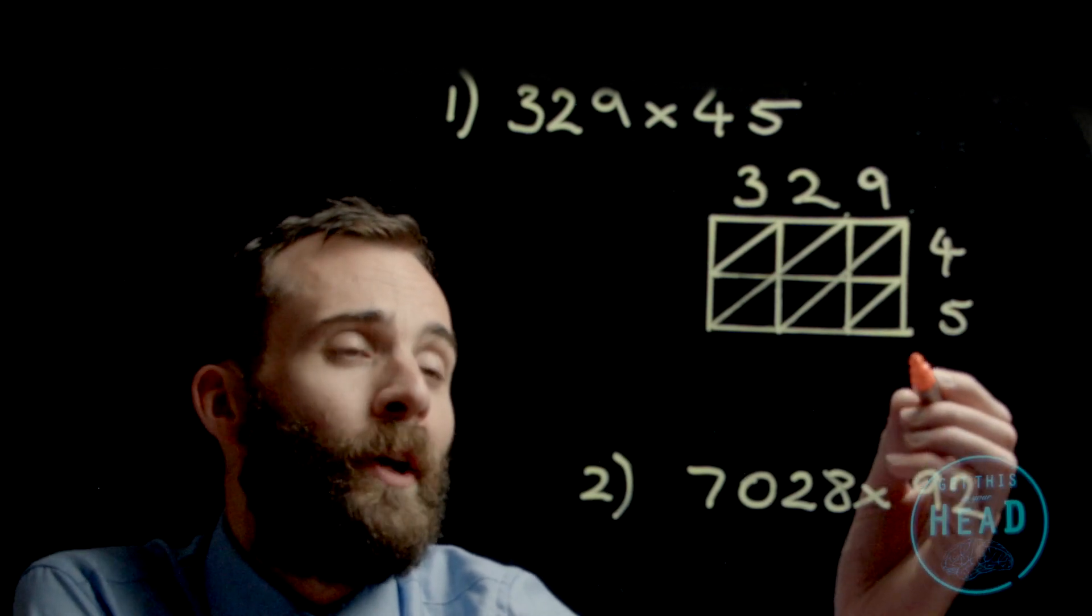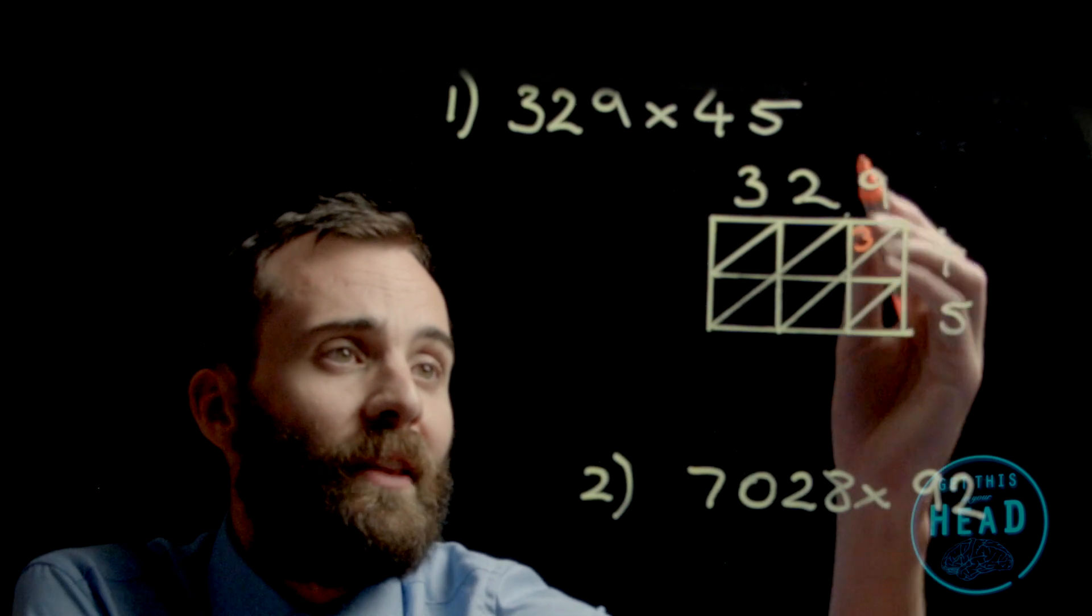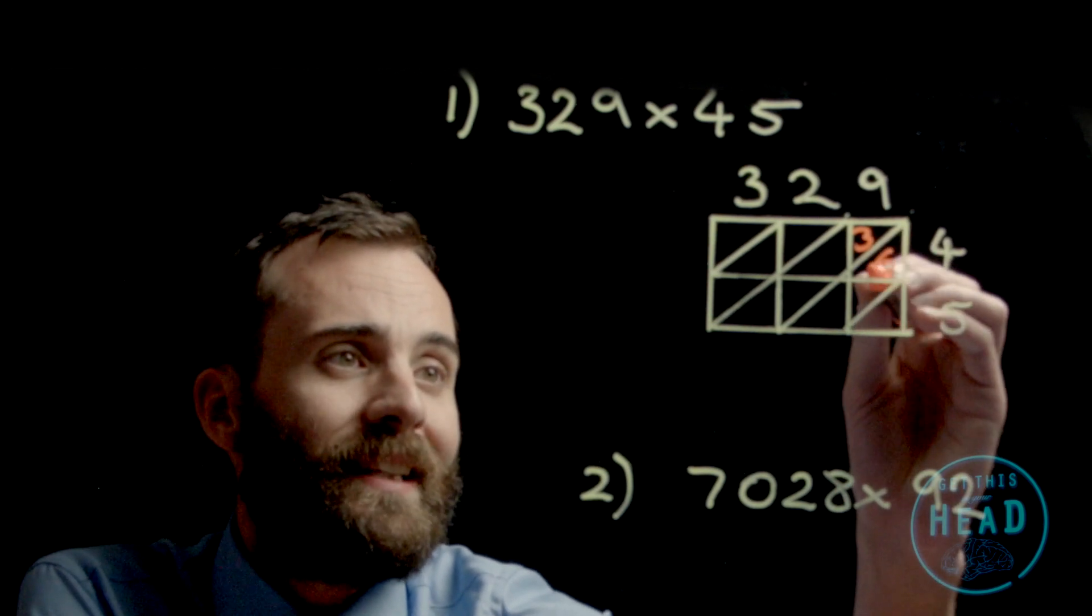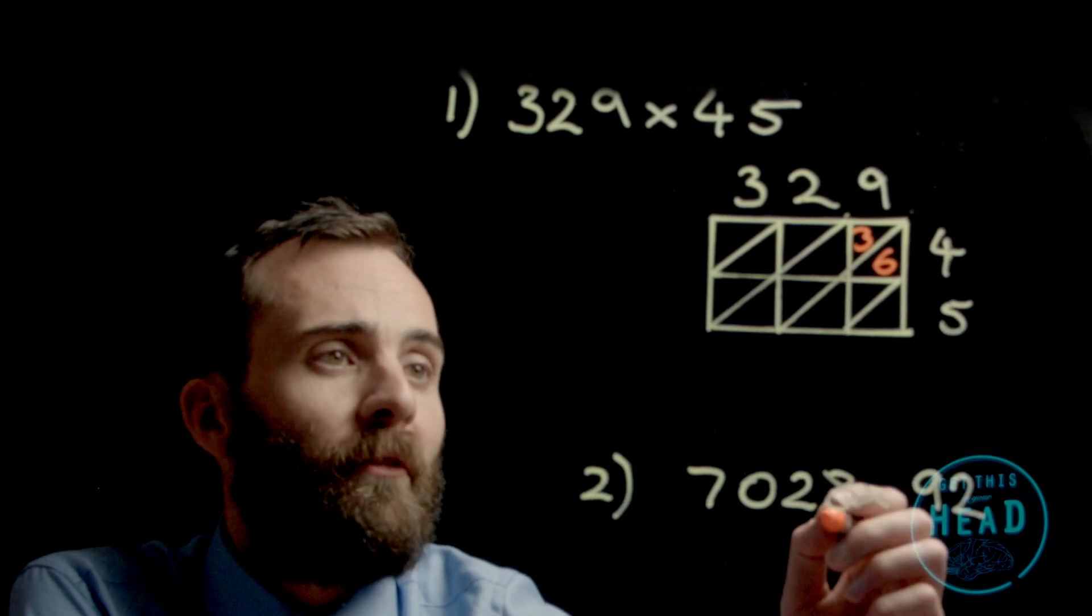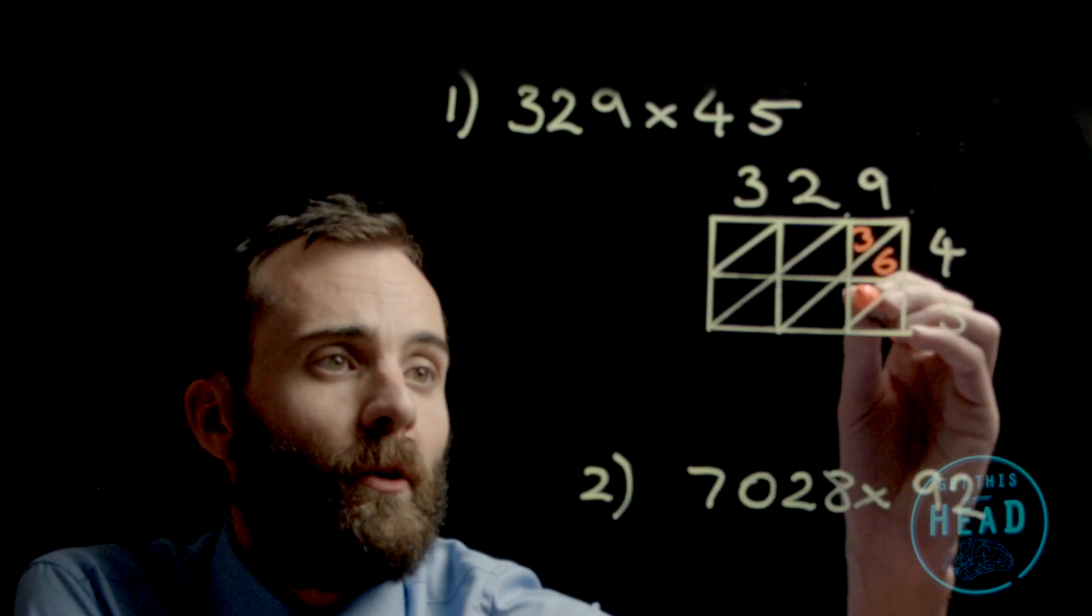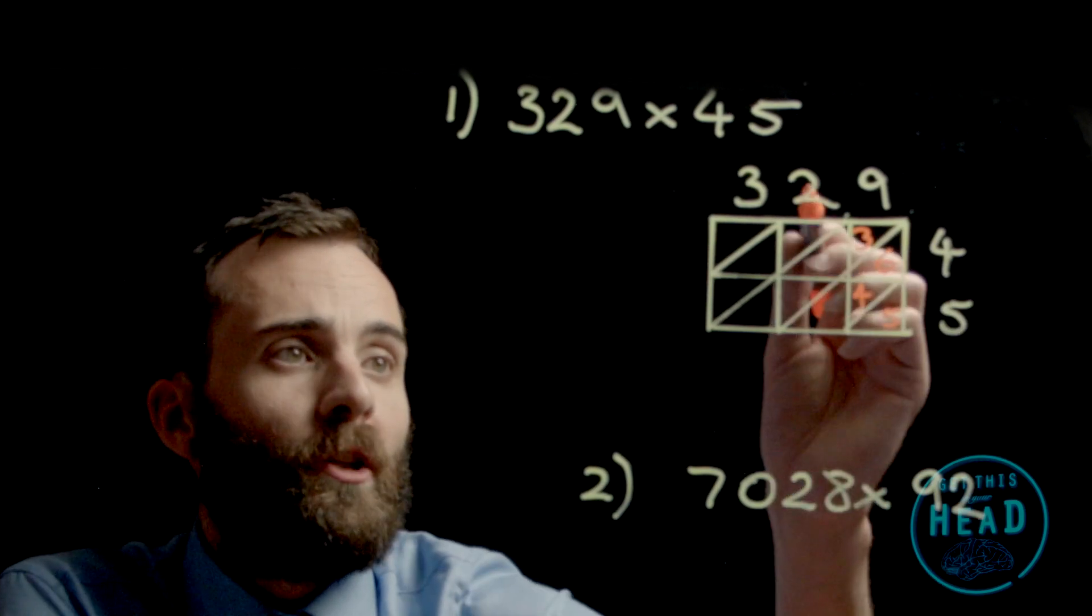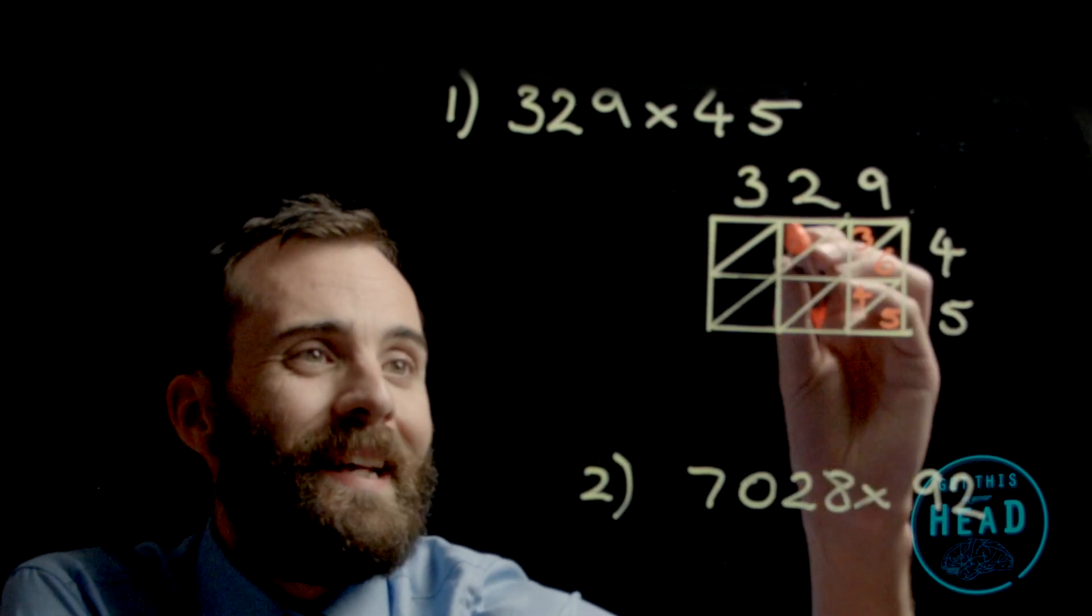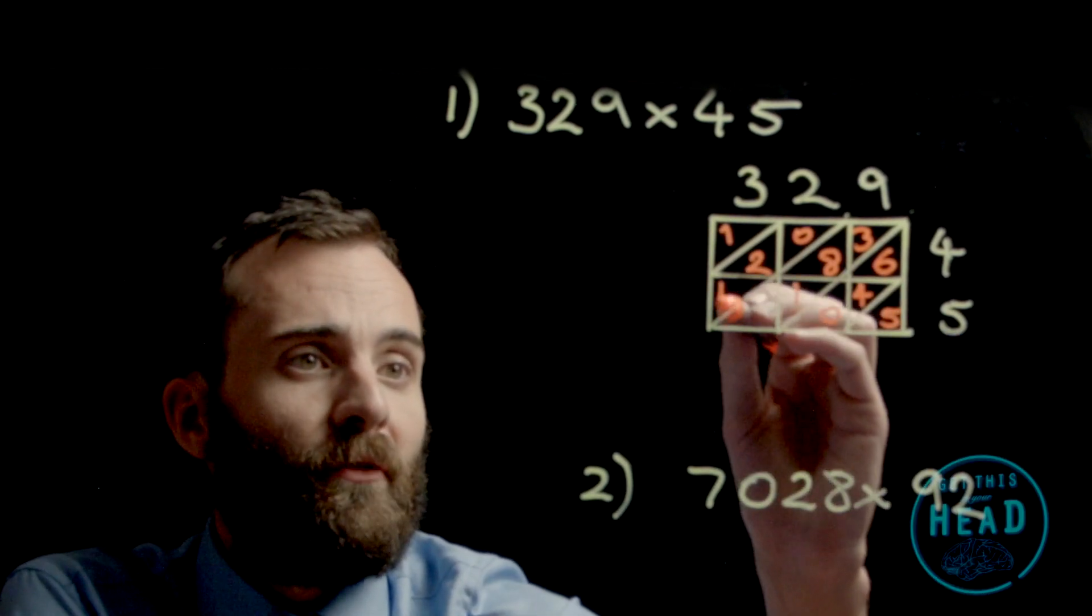9 multiplied by 4 is 36, so we put 3 in the tens part and 6 in the ones section. 9 multiplied by 5 is 45, so we put the 4 and the 5 there. 2 multiplied by 4 is 8. 3 times 5 is 15.